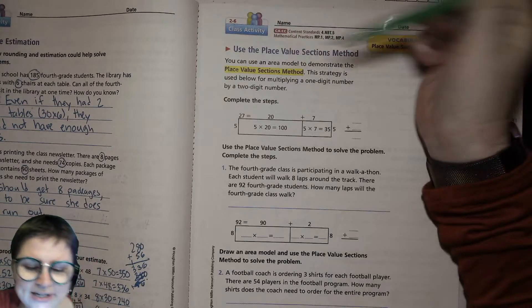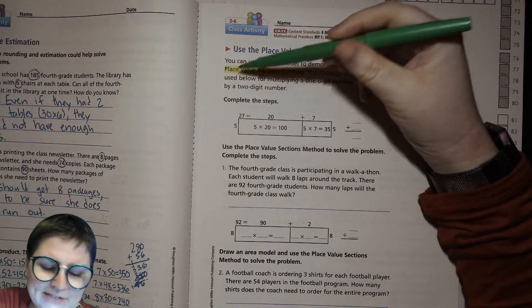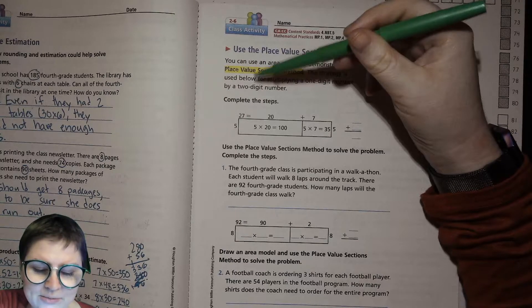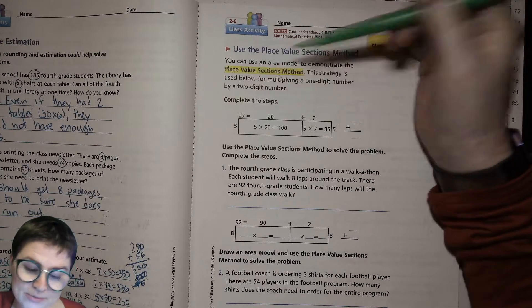You can use an area model to demonstrate the place value sections method. This strategy is used below for multiplying a one-digit number by a two-digit number.